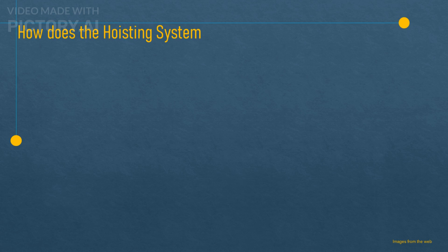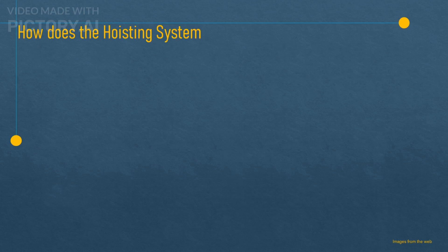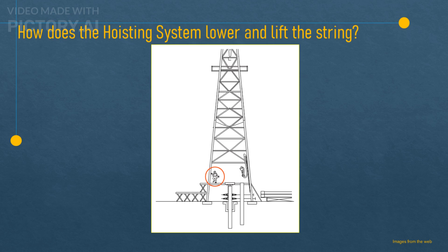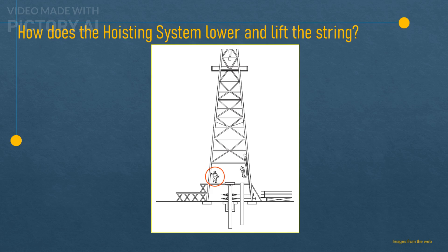Now that you know what each component does, let's see how they work together to lift and lower the drill string. Imagine you are on a drilling rig and you want to lower some drill pipe into the well. Here are the steps you would follow.